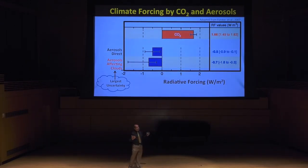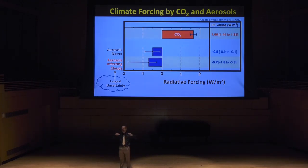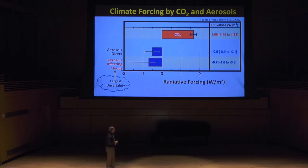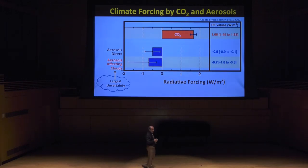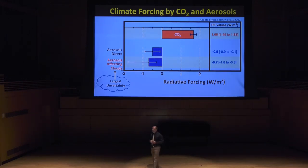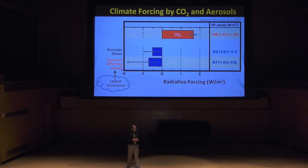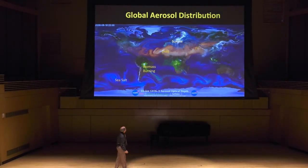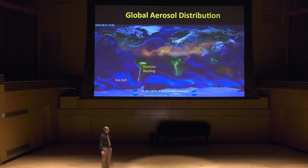A gas like CO2, when dispersed into the atmosphere, gets homogeneously distributed very quickly, goes around the globe, and has more or less the same concentration and effect everywhere. Clouds, as you know when you look at the sky, are very variable — you see very different clouds in different locations and at different times of day, and they change all the time. The same is true for aerosols and the pollution we produce in the atmosphere.